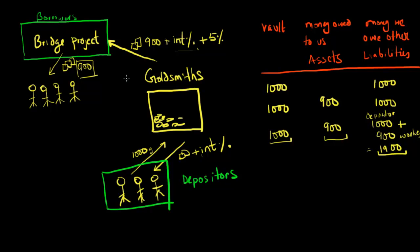So in the last video, we talked about how in this scenario over here to the left, there were depositors who originally deposited 1,000 gold coins with a goldsmith. That goldsmith then loaned out some of that money, 900 of it, to a bridge project. And that bridge project used that money to pay workers. And so these workers over here, who were paid 900 gold coins, also become effectively depositors.